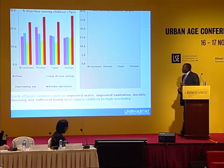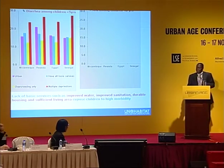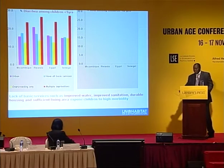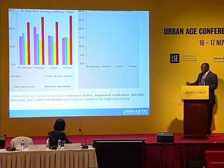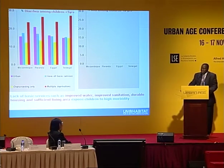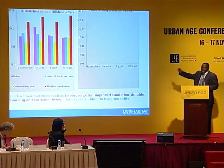Looking at Mozambique, Rwanda, Egypt, and Senegal, there is something interesting: when you lack only overcrowding, the prevalence of diarrhea is lower than if you don't lack anything — meaning you have all the basic services. How is it possible? The problem is due to the fact that the capital cities of Mozambique and Senegal have all the environmental factors, other than household factors, explaining prevalence of diarrhea, and they have very high prevalence of diarrhea. Since households with all basic services are concentrated in those cities, we can understand the anomaly.